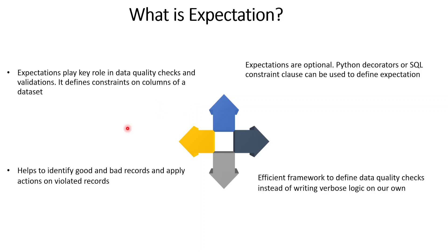With the help of expectations, we can identify good and bad records and also apply actions on violated records. To summarize, expectation is an efficient framework provided by Delta Live Table using which we can define data quality checks instead of writing verbose logic on our own. If this expectation feature were not available, we would have to manually write a lot of code using PySpark or Spark SQL to perform validations. But with expectations, the entire data quality check is simplified — we simply configure the expectations and then the checks are performed accordingly.